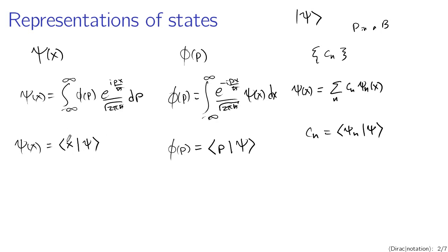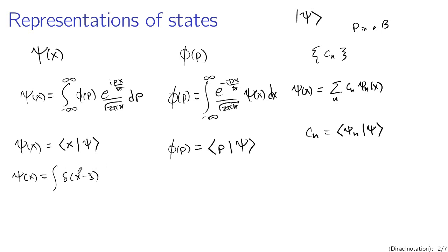For this inner product representation, I need a function representing a quantum mechanical system with known position. That's a delta function with support only where the dummy variable xi equals x. So I'm integrating from minus infinity to infinity over xi, multiplying by psi of xi. It highlights the mathematical similarity of these coefficients: psi of x can be thought of as an inner product between a delta function and the wave function, or between a quantum mechanical state of known position x and the general state.